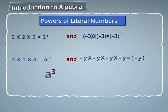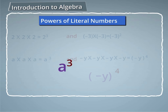a raised to the power 3 is read as 'a to the power 3', or 'a raised to the power 3', or 'a cube', or 'third power of a'. And minus y raised to the power 4 is read as 'minus y to the power 4', or 'minus y raised to the power 4', or 'fourth power of minus y'.